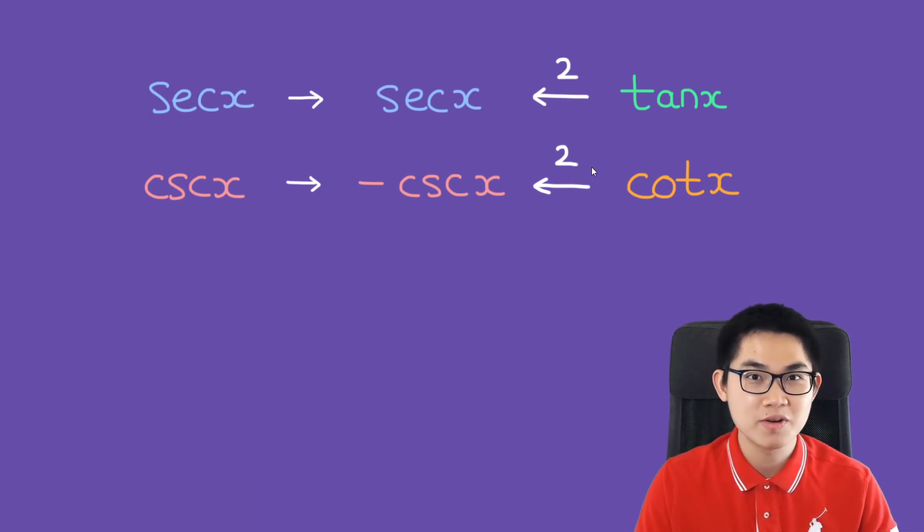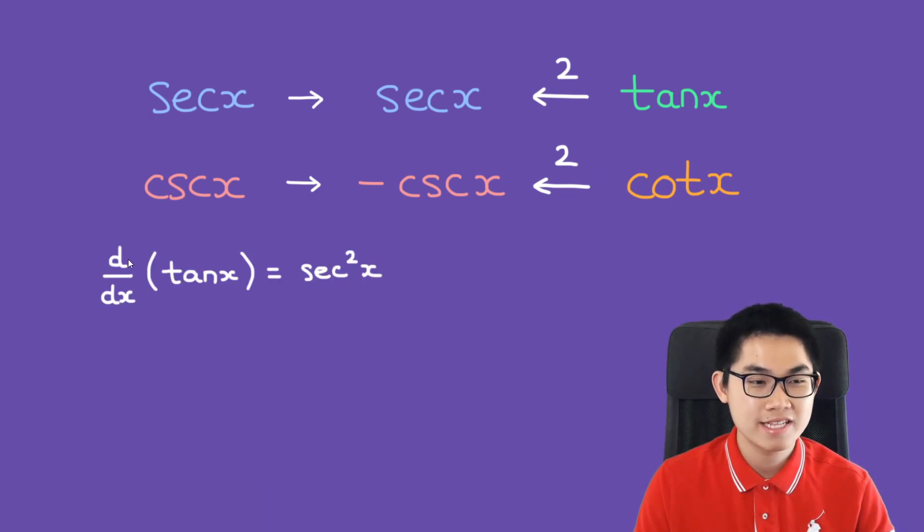The last piece to the puzzle is really easy to remember. We just have tangent and cotangent. Let's start with the derivative of tangent of x. The arrow is pointing this way, so we go here, and we see secant, and then there's a number 2 at the top. So we have secant squared.